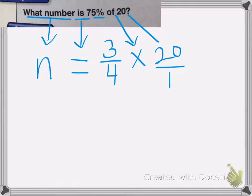So in this case, we're going to change it to a fraction. So let's go ahead and do the problem. So three times 20 is 60, divided by, and four times one is four.